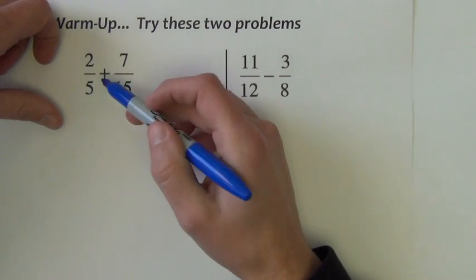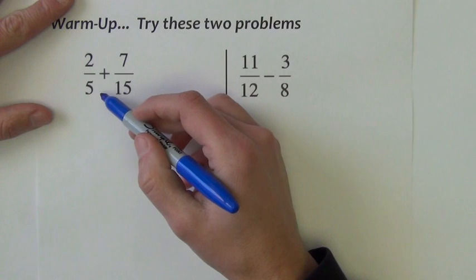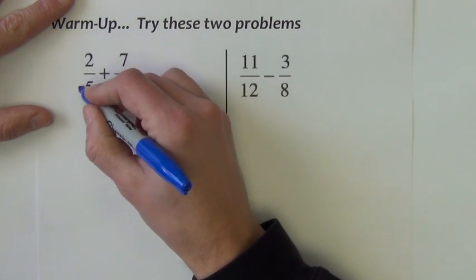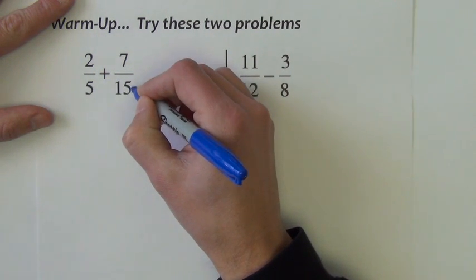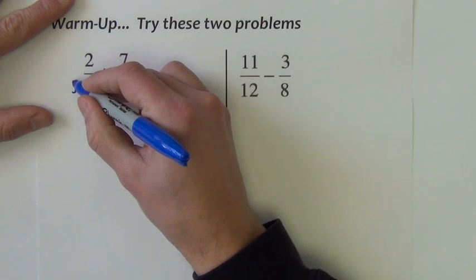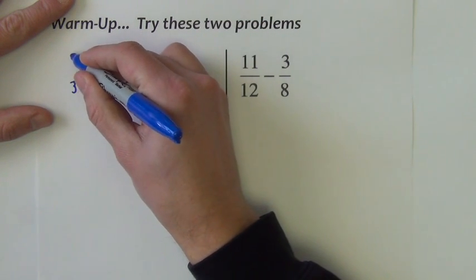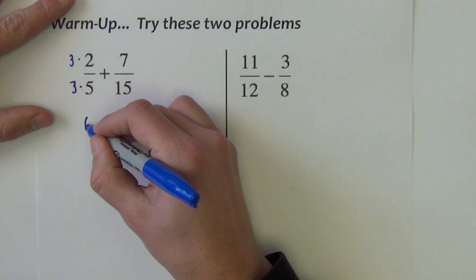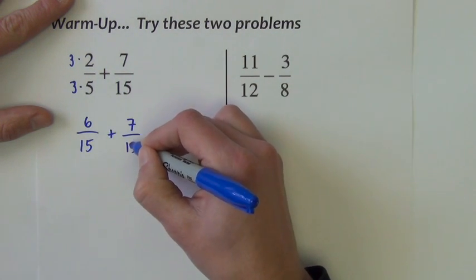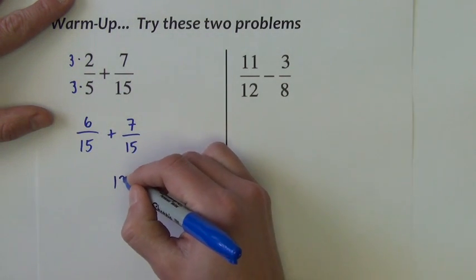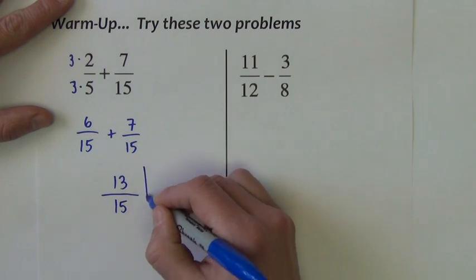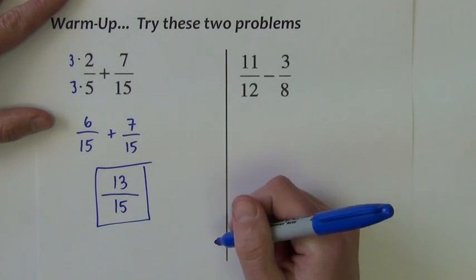The first problem, 2 fifths plus 7 fifteenths, so we need a common denominator between 5 and 15. I can make the 5 be a 15 if we multiply it by 3. I can't just multiply the bottom by 3 unless I also multiply the top by 3. So this becomes 6 over 15 plus 7 over 15. Now we can add the fractions, and when we add fractions, we add the numerators together. We keep the common denominator. 13 fifteenths.